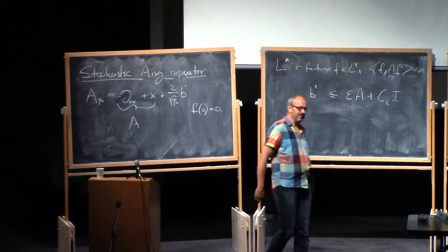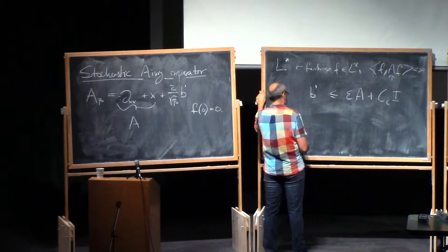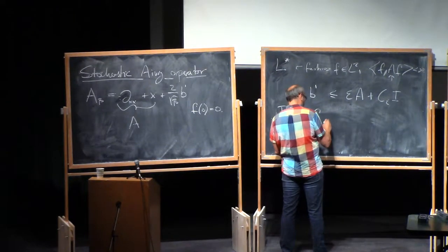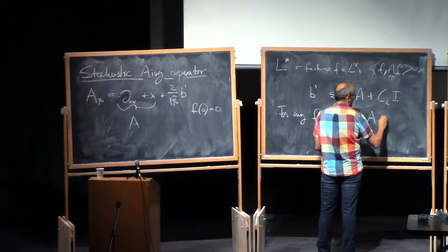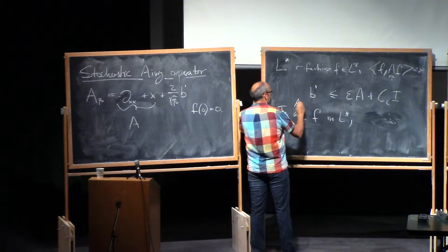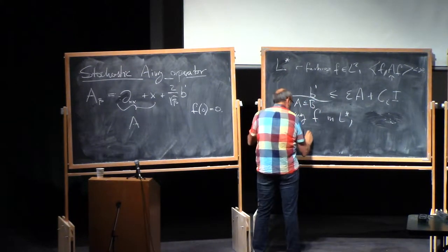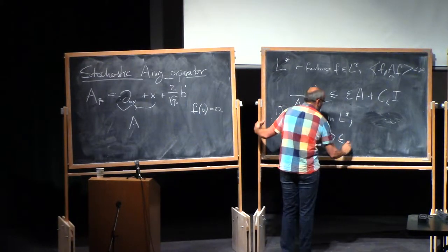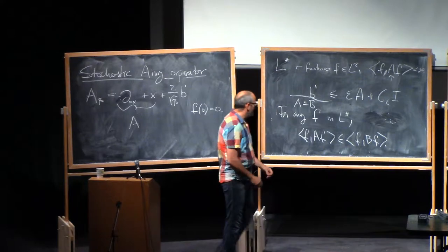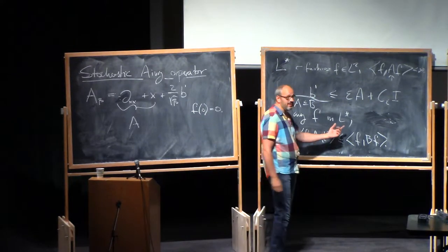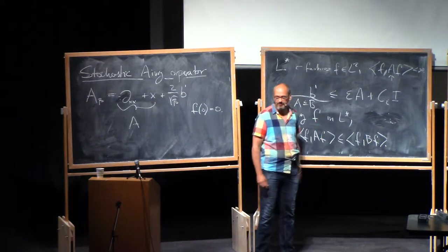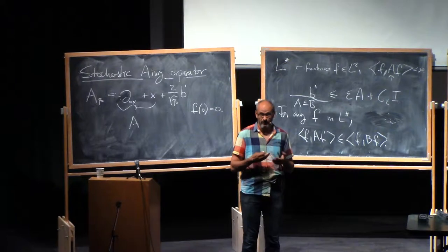Some of you were complaining that I didn't tell you precisely what this domination meant. What this means is that for any f in L*, A ≤ B means that for any f, the quadratic form satisfies that inequality. And if you have this inequality, this implies inequalities for the corresponding top eigenvalues: the k-th top eigenvalue of A is less than or equal to the k-th top eigenvalue of B. That's a nice exercise using the Courant-Fisher characterization.